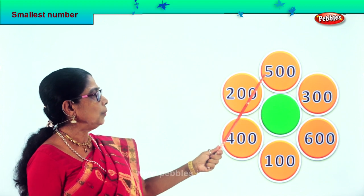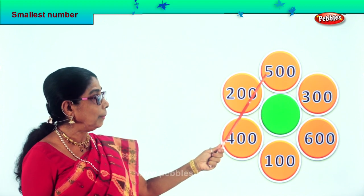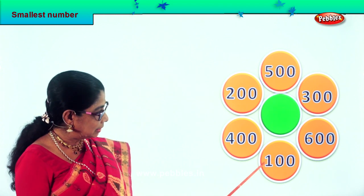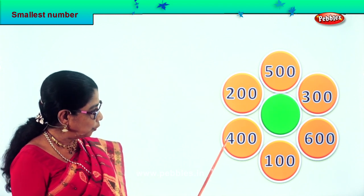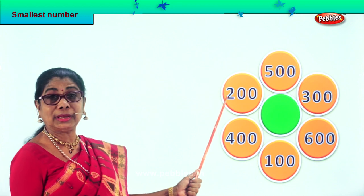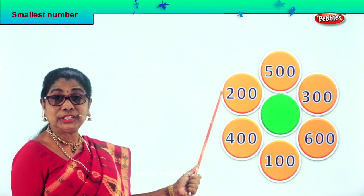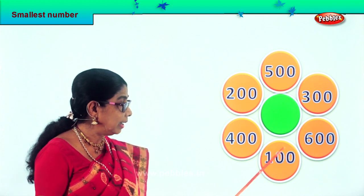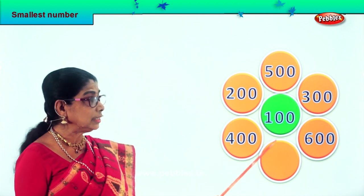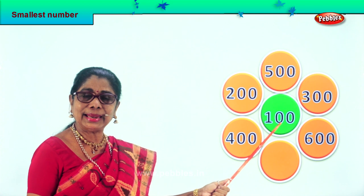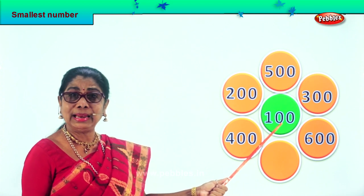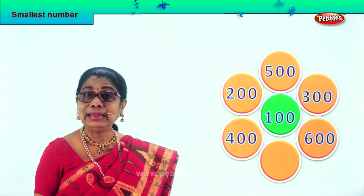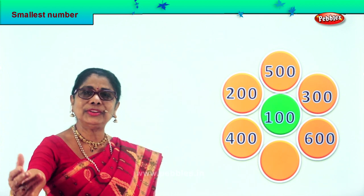Let's look. Here we have five in the hundred place, three in the hundred place, six in the hundred place, one in the hundred place, four in the hundred place, and two in the hundred place. So which is smaller — two or one? Definitely one. So one hundred is the smallest of all the six numbers. We pick it and put it in the center. One hundred is the smallest among the numbers given to you.